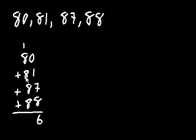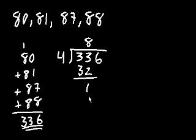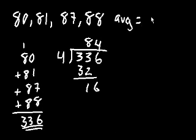And then you have 4 8's, so that's 32, plus 1 is 33. And now we divide this number by 4. 4 goes into 336. It goes into 33 8 times, 8 times 4 is 32. 33 minus 32 is 1, 16, 4. So the average is equal to 84.